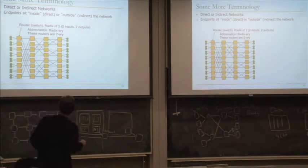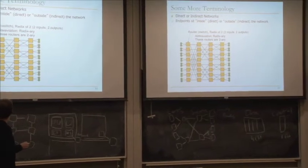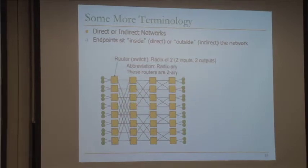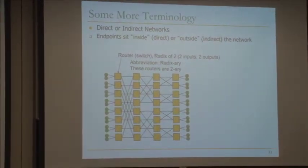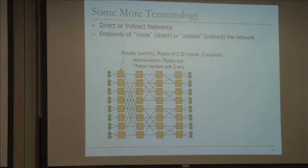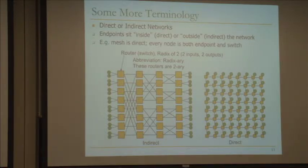There's this notion of radix — basically the number or degree of input and output links on these switches. This is a two-ary indirect network. The distinction is against a direct network.